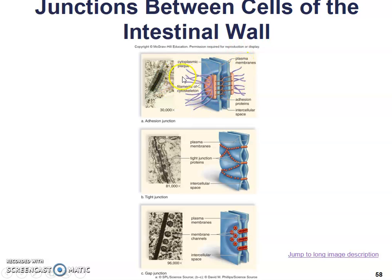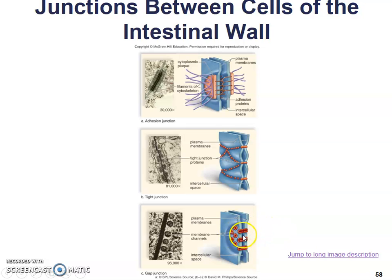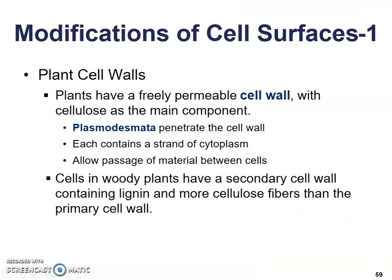Here are some examples, all shown in intestinal walls. Here we have an adhesion junction, here we have a tight junction that holds those cells tightly together, and down here we have a gap junction which allows cytoplasm to move between cells and allows messages and information to be transported very quickly.